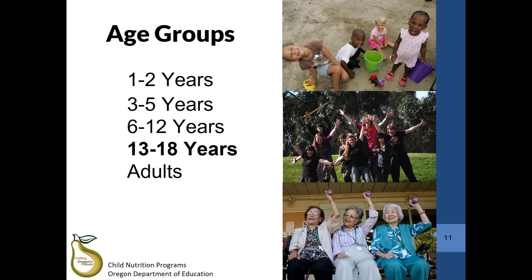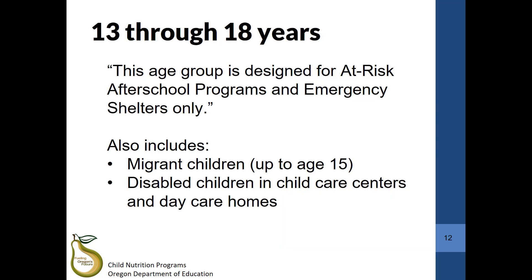The age groups for the child and adult meal patterns have stayed the same with the addition of the 13 to 18 year old age group. All other age groups — one to two years, three to five years, six to 12 years, and the adult age group — have stayed the same. The 13 to 18 year old group is designed for at-risk after-school programs and emergency shelters only. This age group can also include migrant children up to age 15 as well as disabled teenagers in child care centers and family day care homes.